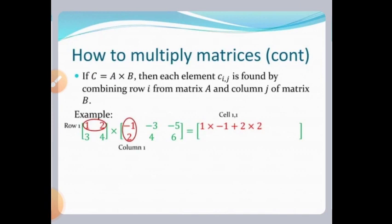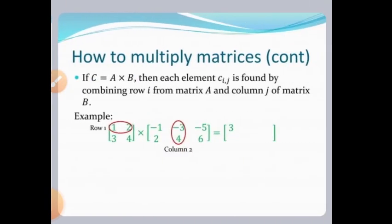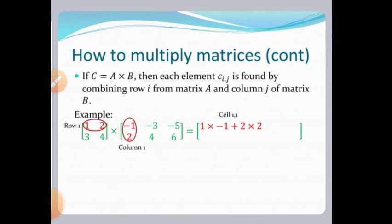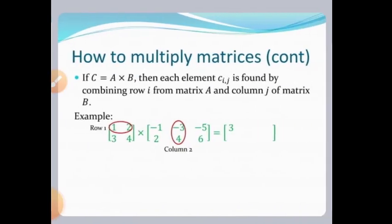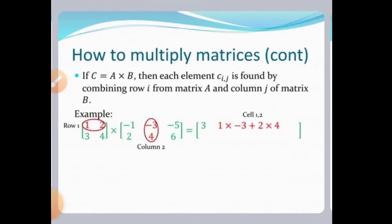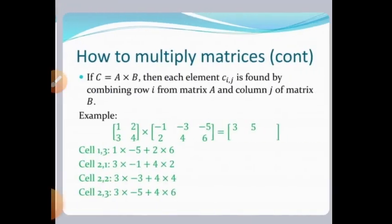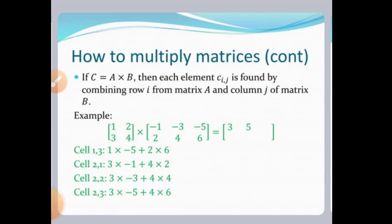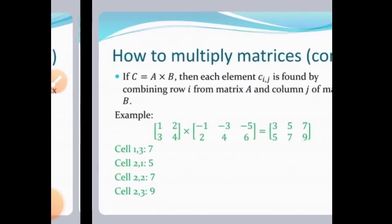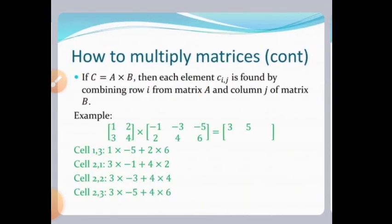Next, take the first row multiplied by the second column: 1×(-3) + 2×4 = 5. Similarly, for the first row × third column: 1×(-5) + 2×6 = 7. So the first row operation is completed.